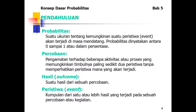Probabilitas adalah suatu ukuran tentang kemungkinan suatu peristiwa atau event akan terjadi di masa mendatang. Probabilitas dinyatakan antara 0 sampai 1 atau dalam persentase. Percobaan adalah pengamatan terhadap beberapa aktivitas atau proses yang memungkinkan timbulnya paling sedikit dua peristiwa tanpa memperhatikan peristiwa mana yang akan terjadi. Hasil atau outcome adalah suatu hasil dari sebuah percobaan. Peristiwa adalah kumpulan dari satu atau lebih hasil yang terjadi pada sebuah percobaan.